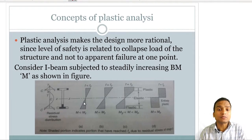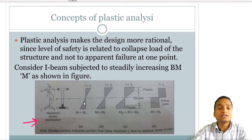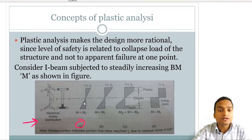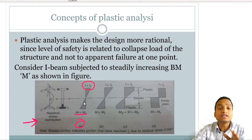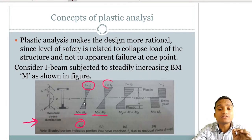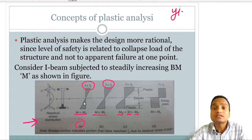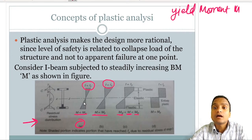Ductility enables the material to absorb large deformation even beyond the elastic limit without fracture. Steel possesses reserve strength even beyond the yield strength, and the method that utilizes this reserve is called plastic analysis. The concept of plastic analysis is shown in stress diagrams of an I-beam cross-section loaded in bending. In the first figure, moment is less than yield moment and extreme fibers have not reached yield stress. When moment equals the yield moment, stress in the extreme fiber equals the yield stress. Yield moment and plastic moment are two different values — plastic moment is larger.